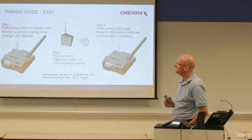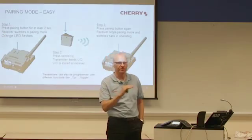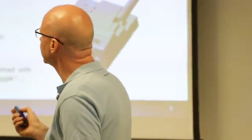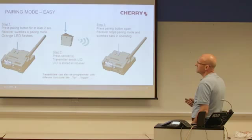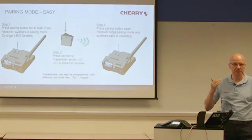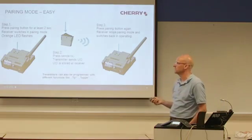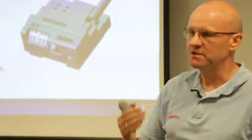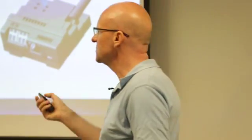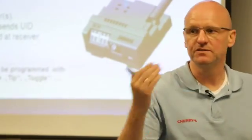On slide six, the first step is to activate the pairing mode on your receiver. Press the pairing button on the receiver — it is the right one — for at least two seconds. Use a pencil; that is the best way. Hold it on the pairing button for at least two seconds, then the receiver switches into pairing mode, the LED flashes, and you can see that the receiver is now in pairing mode. How it works and how the LED flashes is all described in the receiver manual.